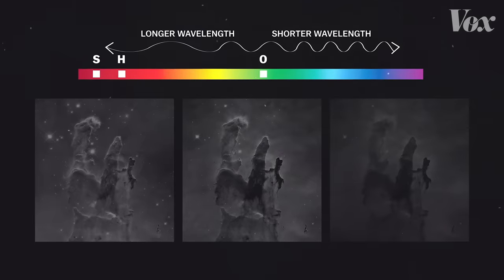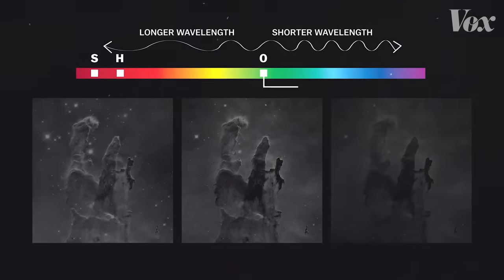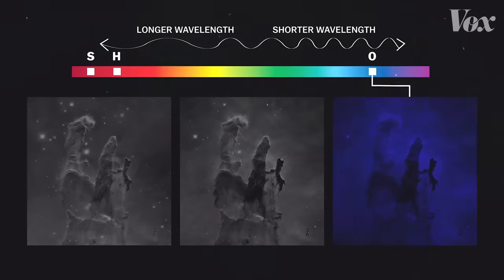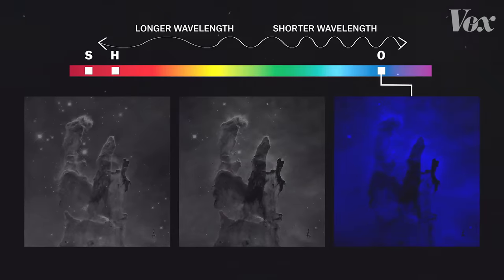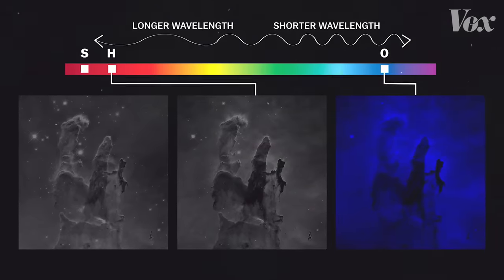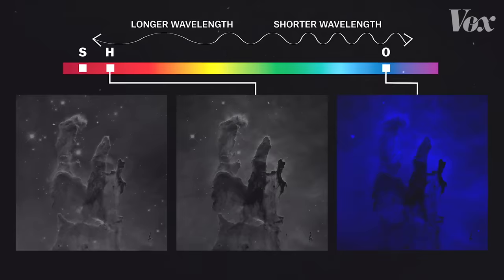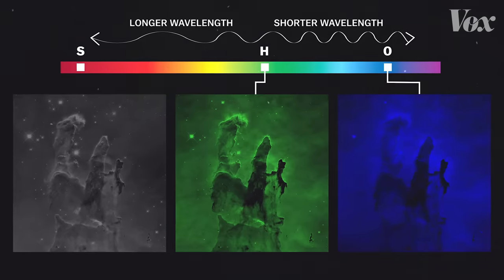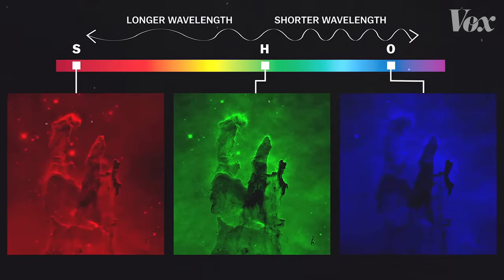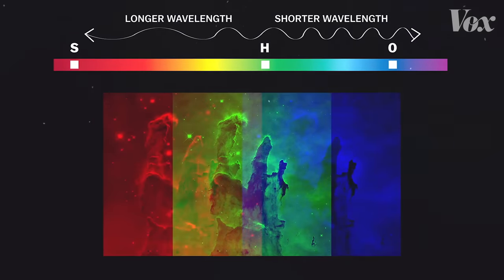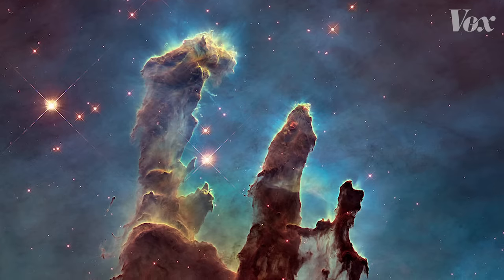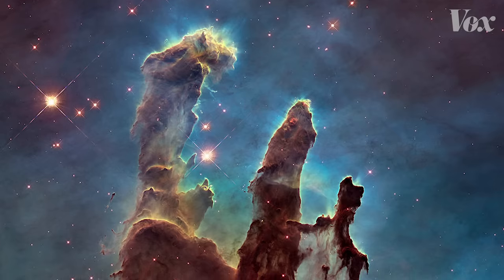Since oxygen has the highest frequency of the three, it's assigned blue. And since hydrogen is red but a higher frequency than sulfur, it gets green. The result is a full color image mapping out the process by which our own solar system might have formed.